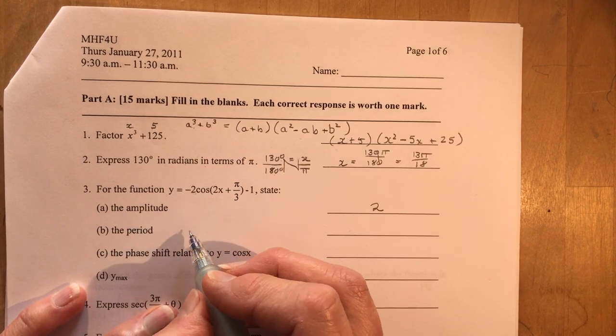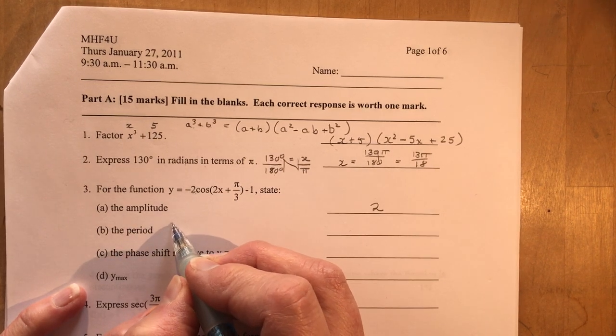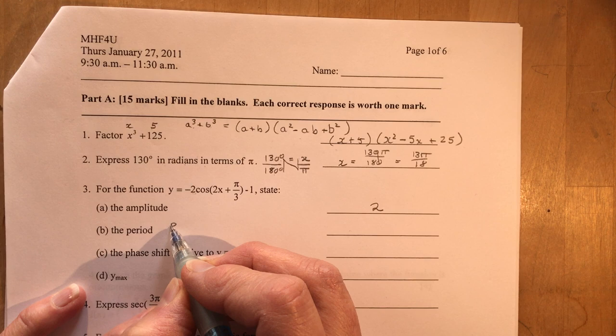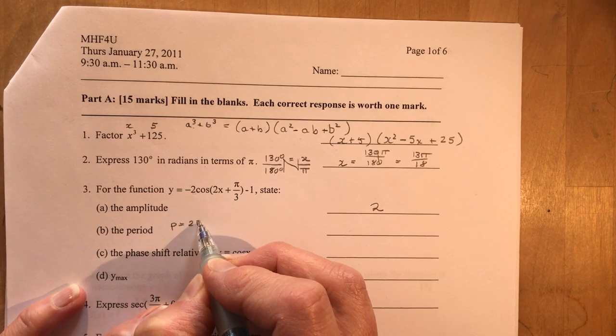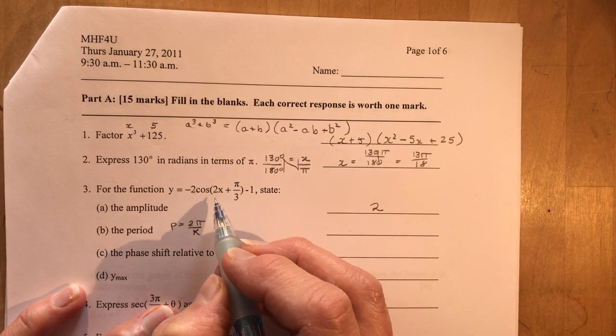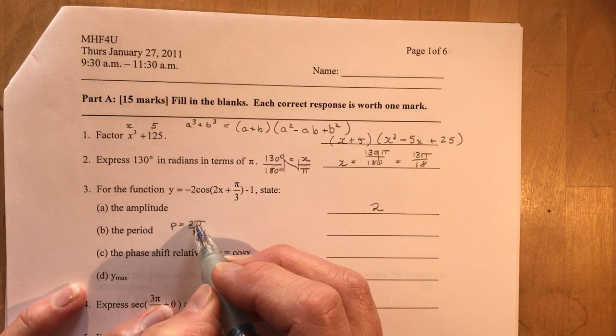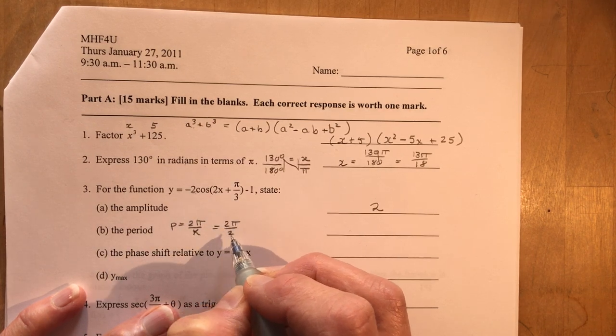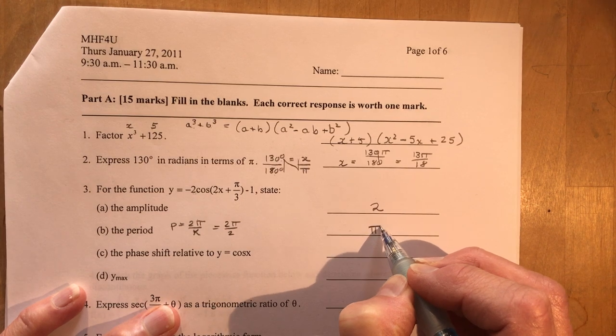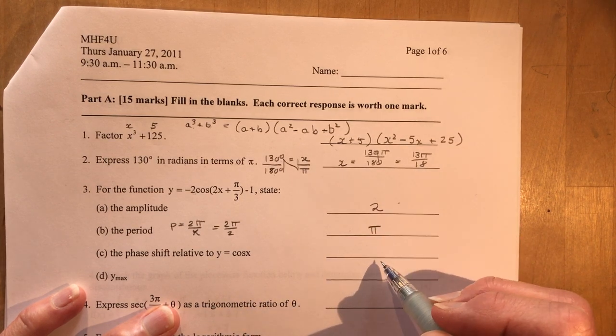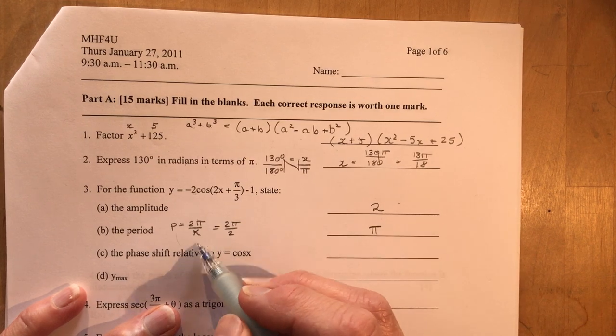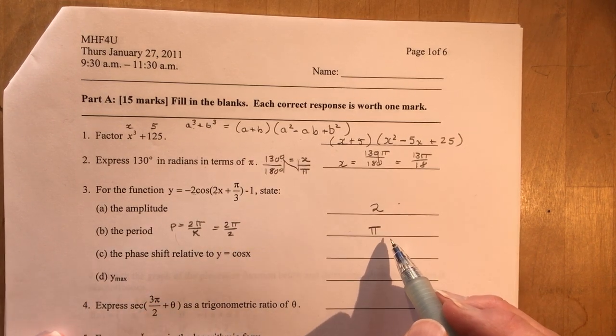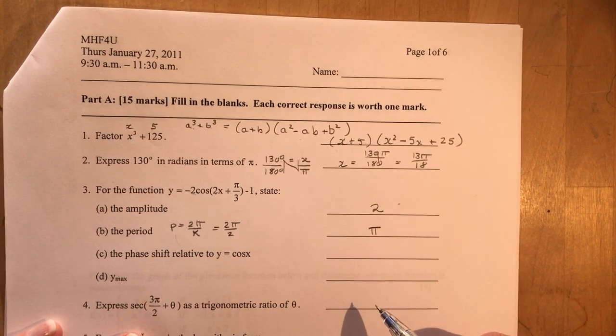What is the period? The period remember comes from the little formula. We have period equals 2 pi over k. And in this case our k is a 2. So 2 pi over 2. That's going to give you pi. Now your teacher is only going to look here because they're only worth one mark. So as much as you might know what you're doing, if they're only worth one mark, it's only looking for the answer.